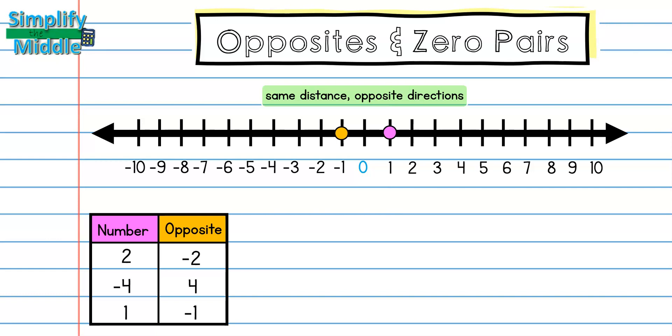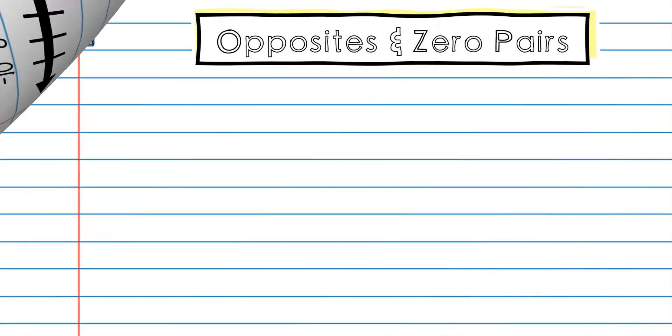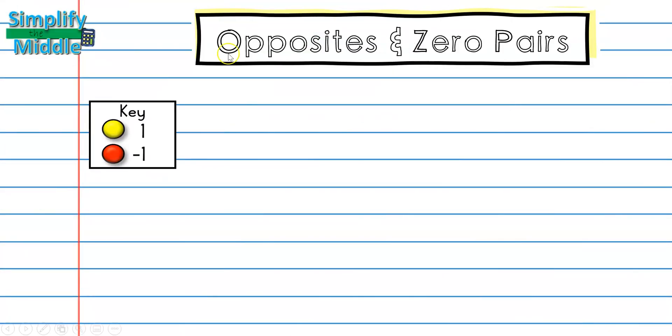This brings us to our next section of the lesson, zero pairs. Here I have my key, and in my key I have a counter. A yellow counter is representing positive 1, and a red counter is representing negative 1. What happens if I combine these together? Well, remember we said in the last example that 1 and negative 1 were opposites. Notice that when we add them together, we end up with 0.